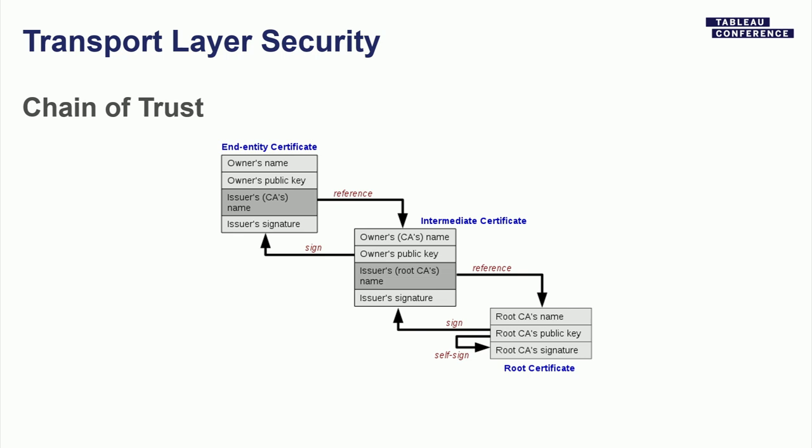To solve this problem, your browser and Tableau Online use TLS. Tableau Online presents a digital certificate to you that says: here's my name — Tableau Online; here's my domain name — online.tableau.com; here's how long my certificate is valid for; and here's who issued this certificate to me, with a digital signature by the issuer. As an end user, you can inspect this issuer. We call entities that issue certificates certificate authorities, or CAs. You can inspect the CA's certificate, which includes their name, domain, public key, validity period, and their own issuer.